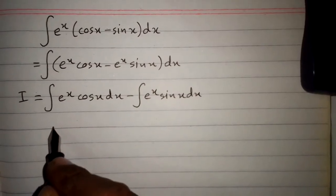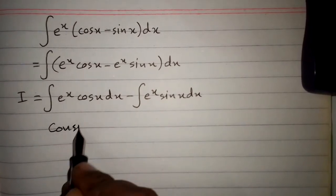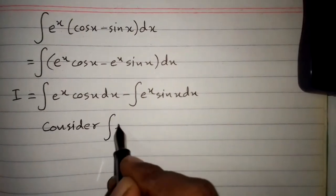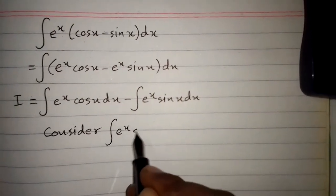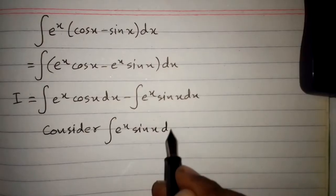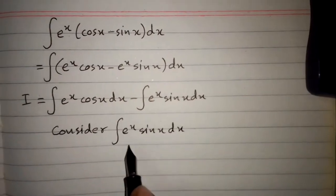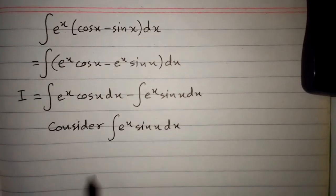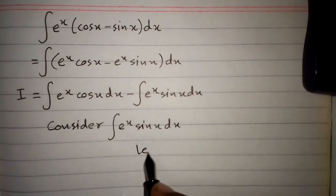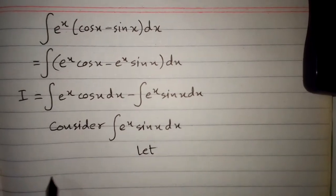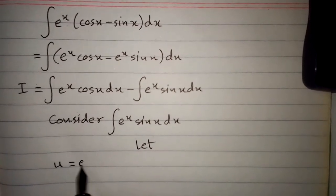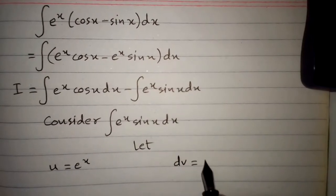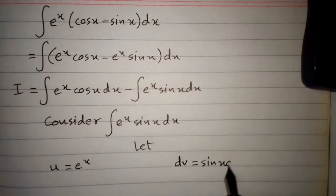In order to integrate this function we will choose the integral of e to the power x sin x dx. To integrate e to the power x sin x we will use integration by parts. So first of all let u equal e to the power x and dv equal sin x dx.